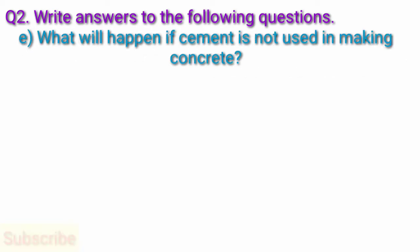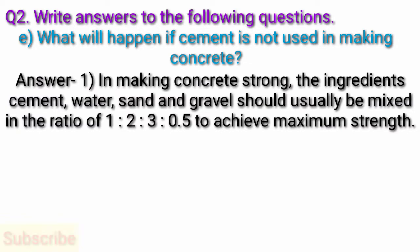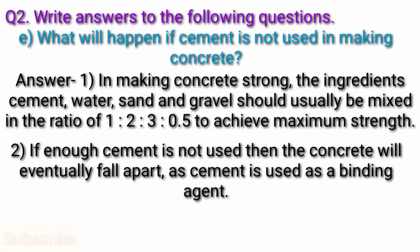Question E: What will happen if cement is not used in making concrete? Answer: In making concrete strong, the ingredients — cement, water, sand and gravel — should usually be mixed in the ratio of 1:2:3:0.5 to achieve maximum strength. If enough cement is not used, then the concrete will eventually fall apart, as cement is used as a binding agent.